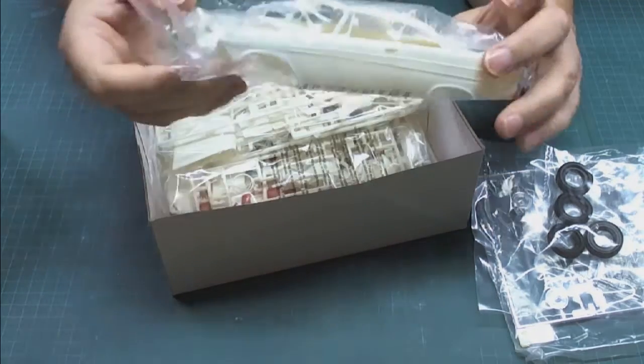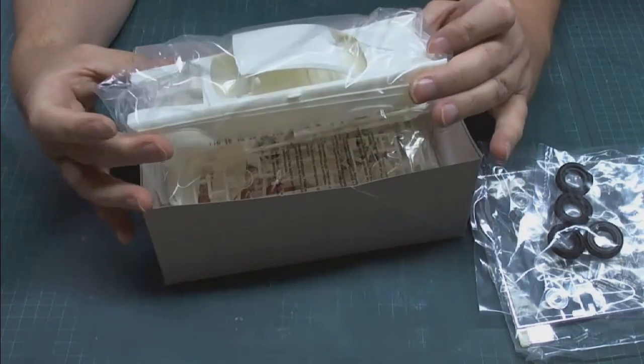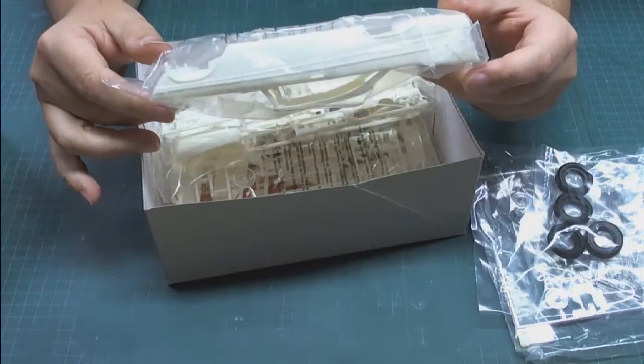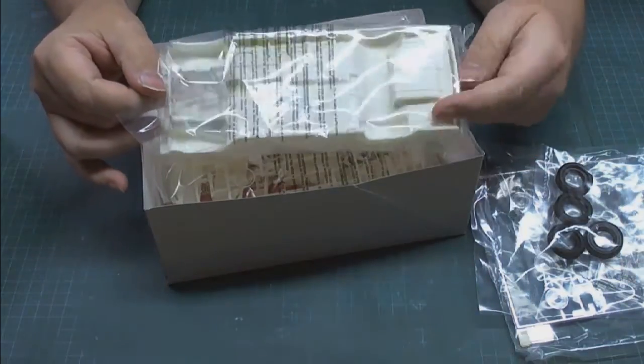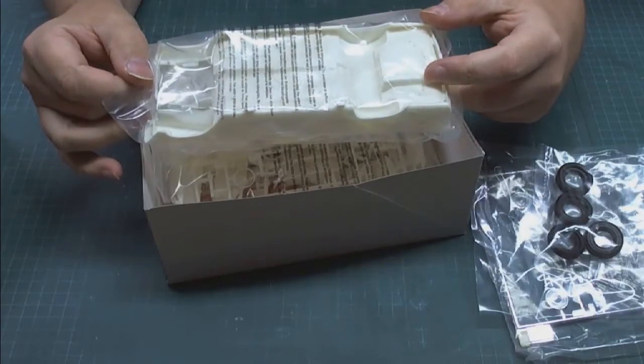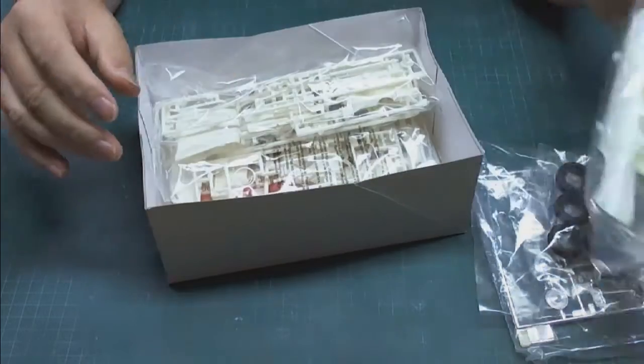My disappointment in this so far is that the trunk deck lid is actually molded in. So although they have a trunk in the back where you can see here on the bottom that they've got the fuel compartment, they have no interior for the trunk which is kind of disappointing.